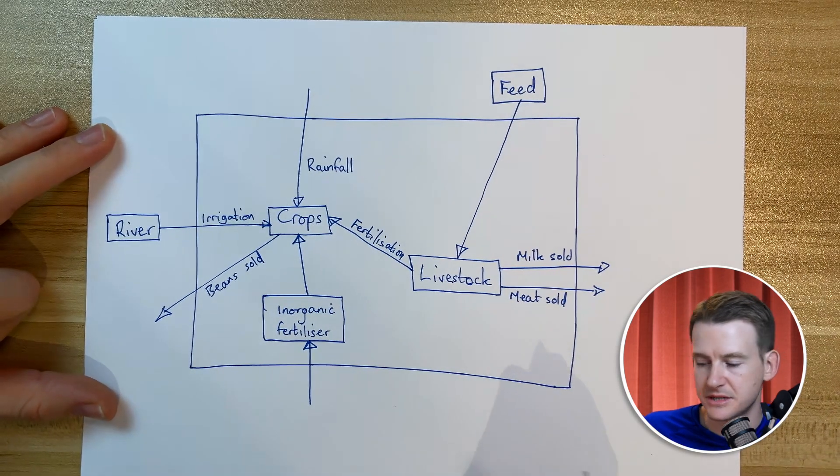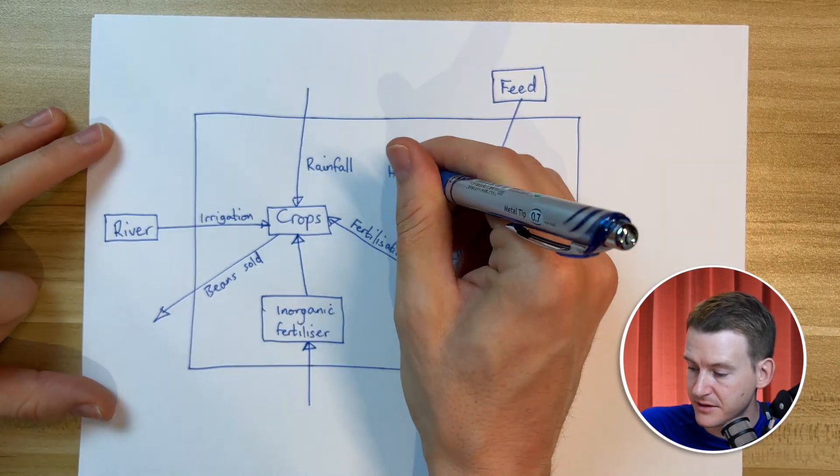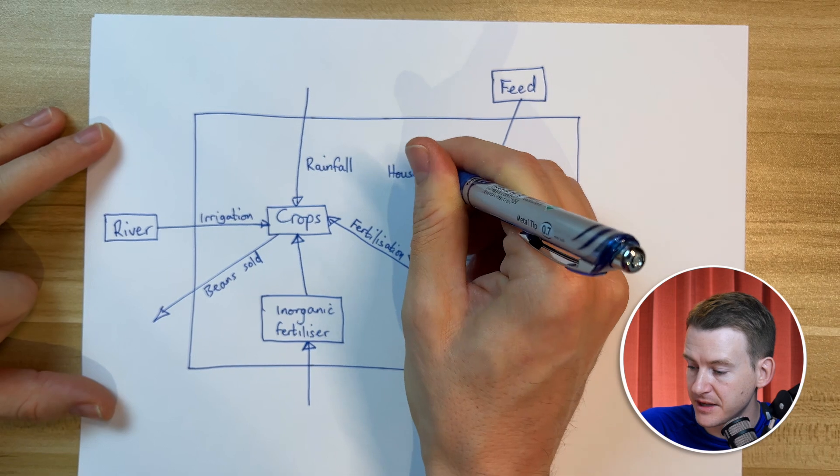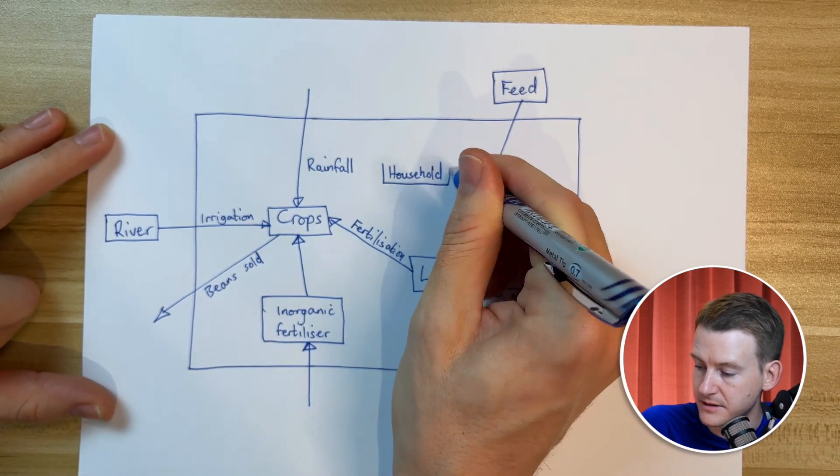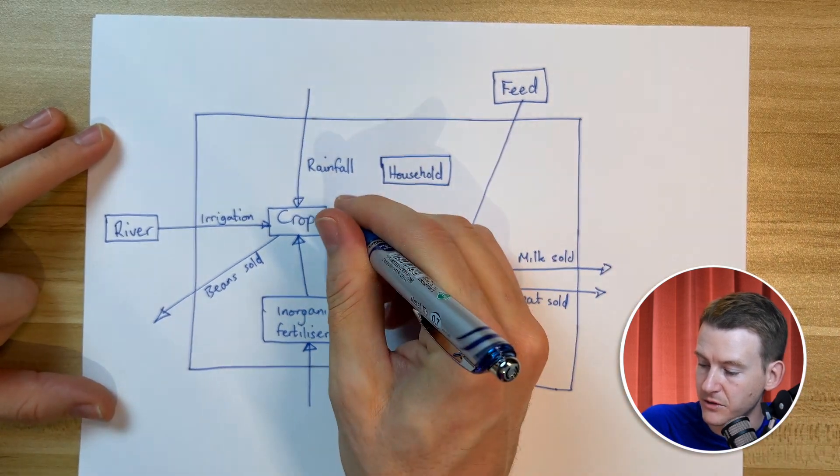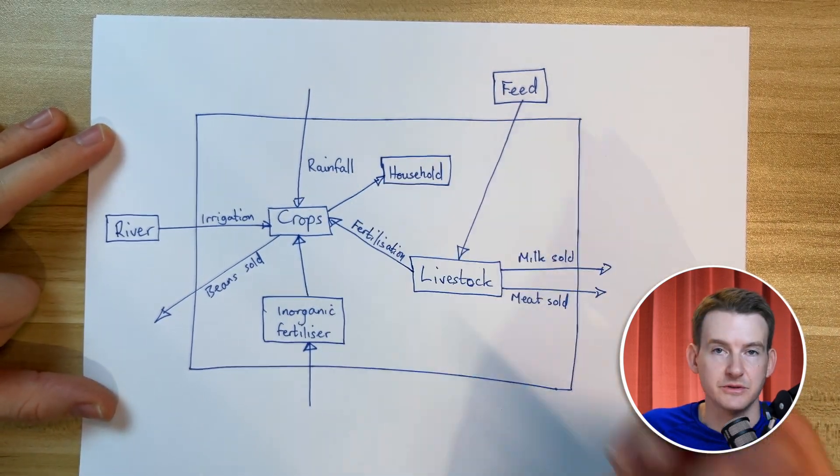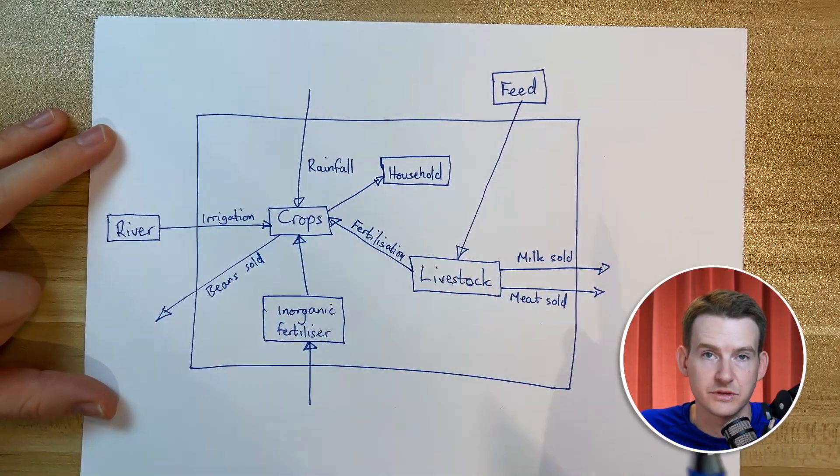Now what's more, in this farming system we've also got the household. So this would be the farming family, and a certain small portion of the crops that are produced might also be provided to the household. So they're relying on this food as part of their own food source.